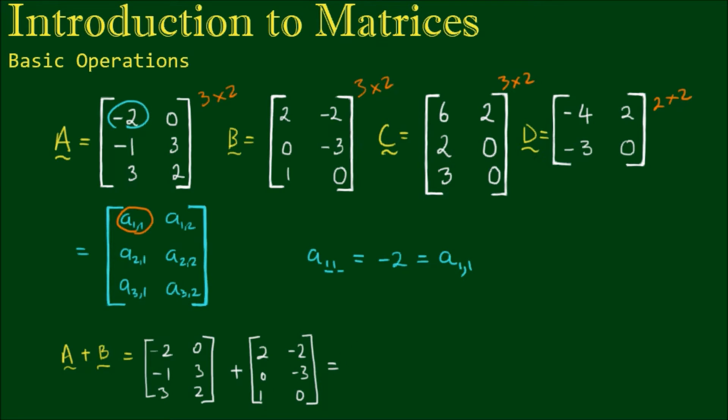Alright, so with matrix addition, all we do is add the corresponding elements of two matrices together to form the elements in the new matrix. So negative 2 and 2 add to give 0. 0 and negative 2 add to give negative 2. Negative 1 and 0 add to give negative 1. 3 and negative 3 add to give 0. 3 and 1 add to give 4, and 2 and 0 add to give 2.